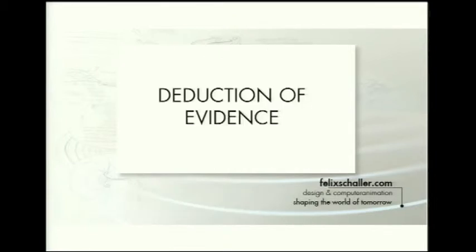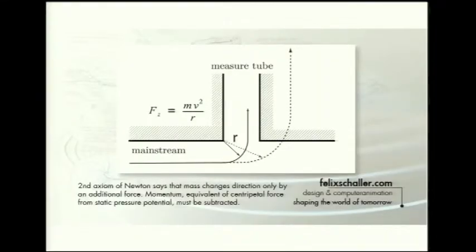How can we make evidence that this is a wrong understanding? Matter will not change direction according to Newton's second law unless an additional force is applied. So for matter streaming inside the measuring tube, you have to apply an additional force to deflect the pressure in that direction, and therefore you have to withdraw pressure force, which is then recorded as a pressure drop.